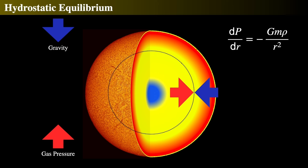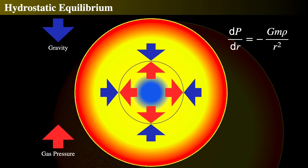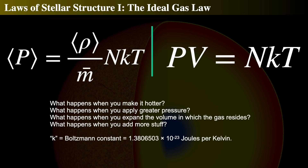Let's look at that one more time. The blue arrows represent gravity pulling in and gas pressure pushing outward. As you go deeper, both the pressure and the gravitational force increase. So the deeper you go, the greater the pressure.